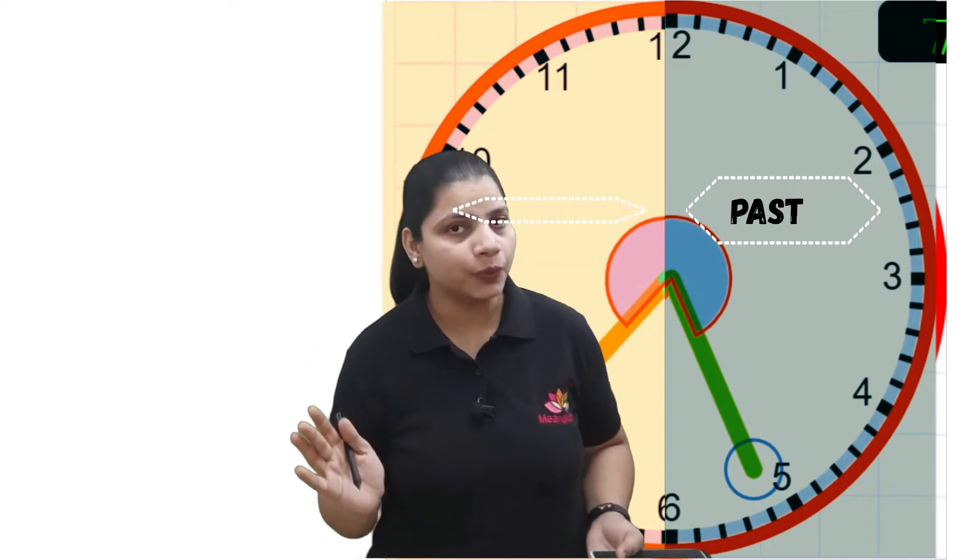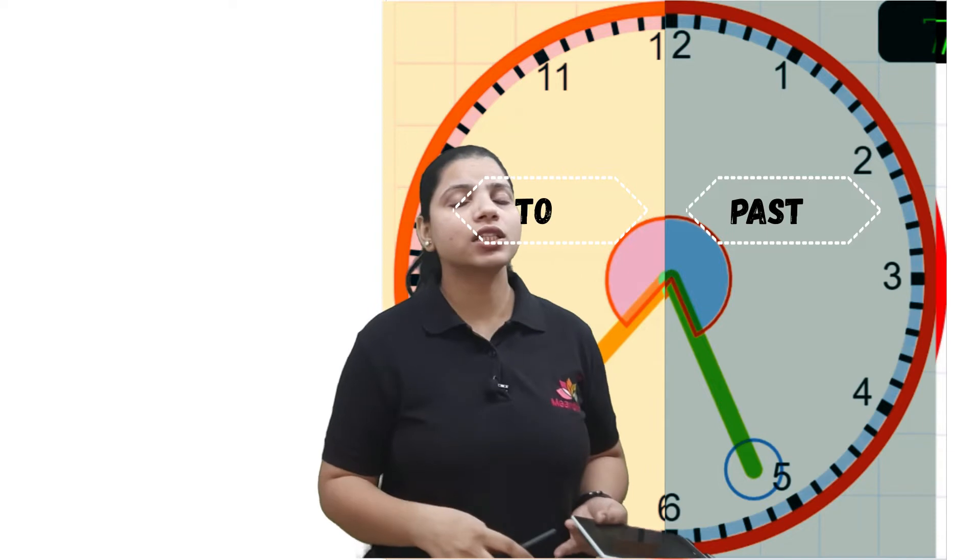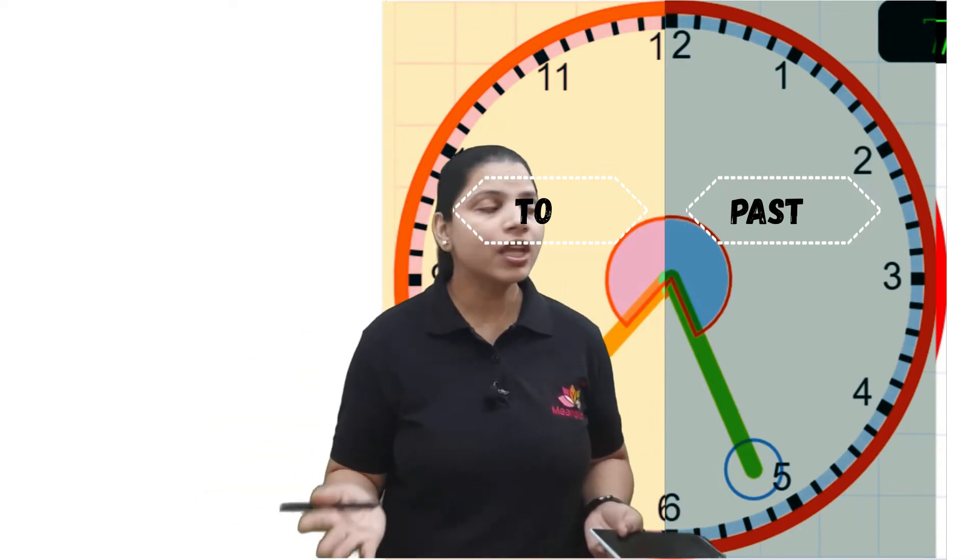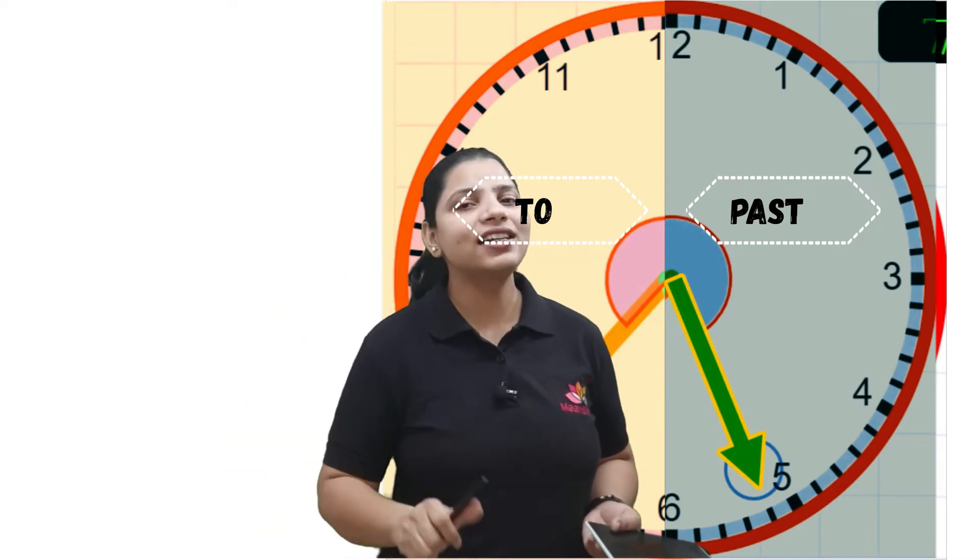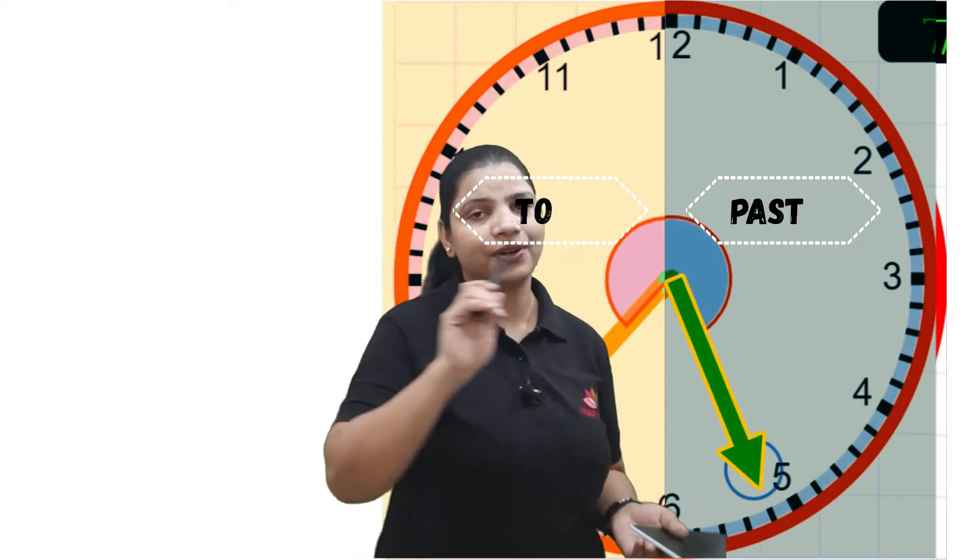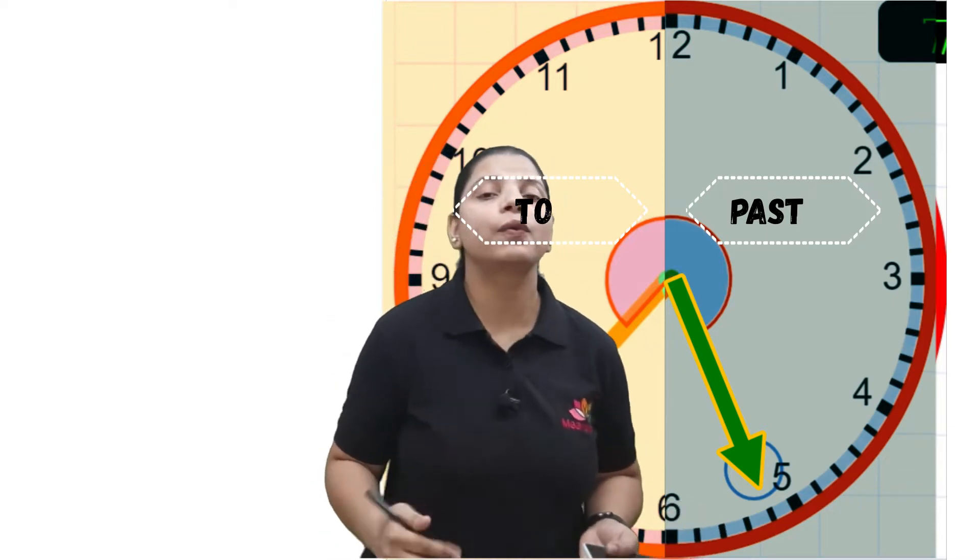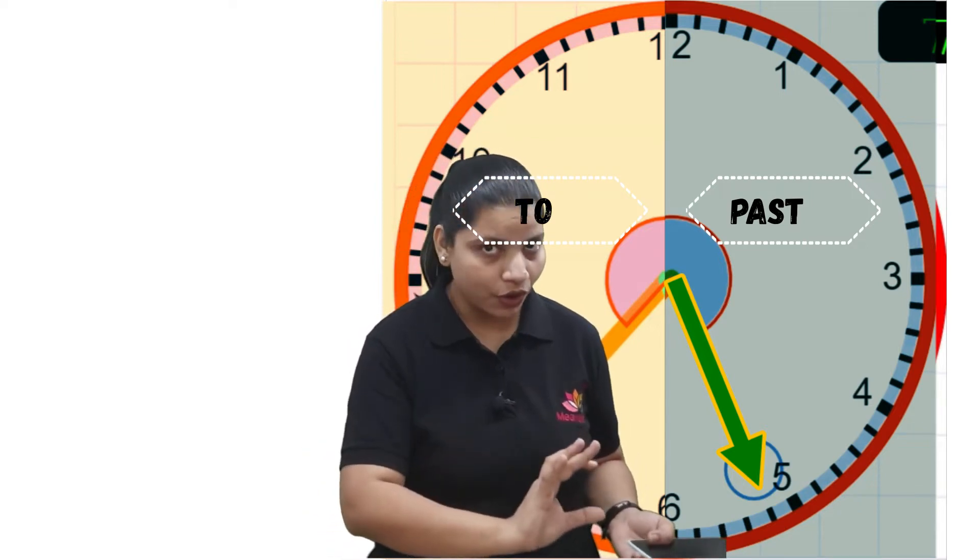And the other half that includes larger numbers such as seven, eight, nine, ten, eleven is for to. And which hand lets us know what to use, past or to? This power is given to minute hand. Minute hand has the power to tell whether it's past or to. If minute hand lies in the smaller region it will be past. If the minute hand lies in the larger region, larger part of the face of clock, it will be to.